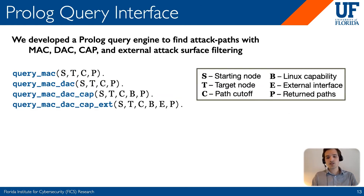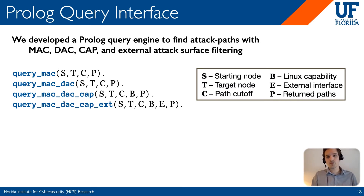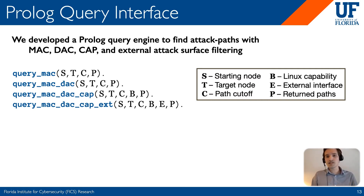To use Big Mac, we developed a query interface in Prolog which allows us to traverse the graph with a custom graph traversal algorithm, taking into account our three security policies and a fourth called the external attack surface. These four policies are applied in layers: the MAC policy is applied first, then the DAC policy, and then the CAP policy. Each application of a different security policy further refines the paths returned, giving a more fine-grained understanding of the relationships between starting nodes and target nodes and the paths between them — indicating possible privilege escalation avenues.